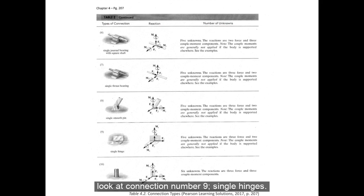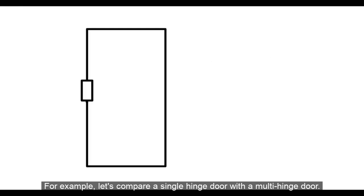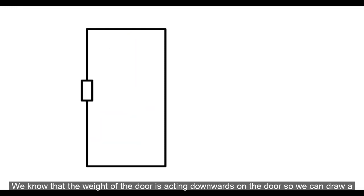We'll take a closer look at connection number 9, single hinges. For example, let's compare a single hinge door with a multi-hinge door. On the single hinge door, let's say this box here represents the hinge and this big rectangle represents the door. We know that the weight of the door is acting downwards on the door, so we can draw a downward force and label it W.